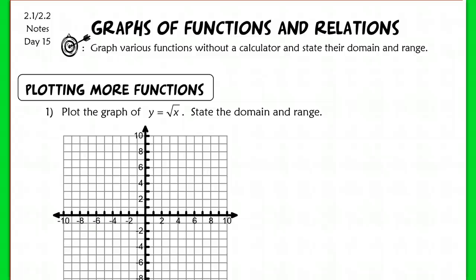This is sections 2.1 and 2.2 in our textbook. We're getting into chapter 2 here, and we're going to be graphing functions and relations. We only have a couple more lessons in this whole chapter, so we're going to be coming back to the idea of graphing with a table.